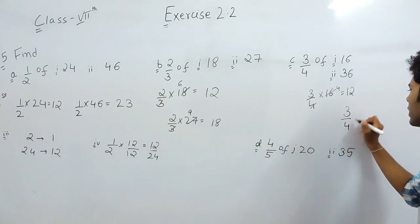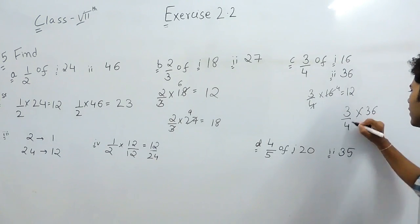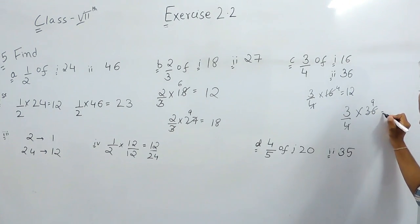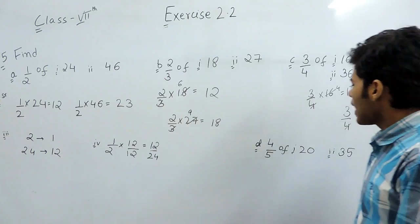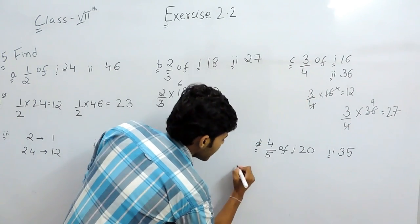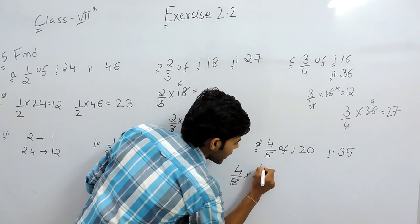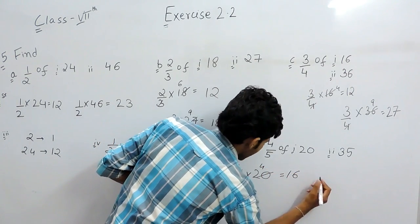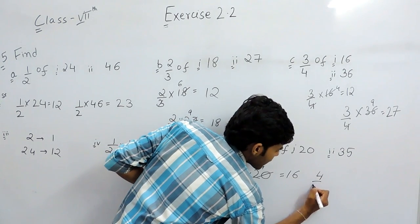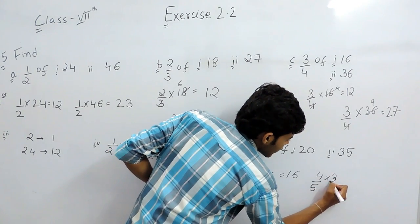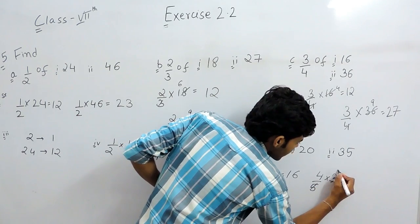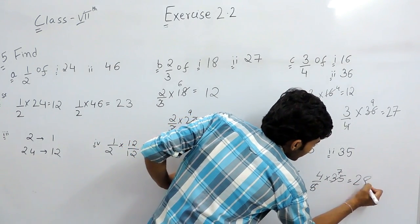The third part, we will multiply 3 upon 4 with 36, that will be 27. And now the last part, we will again multiply 4 upon 5, first with 20. 5 4 times, that will be 16 and then we will multiply 4 upon 5 with 35, that will be 7 times and the answer will be 28.